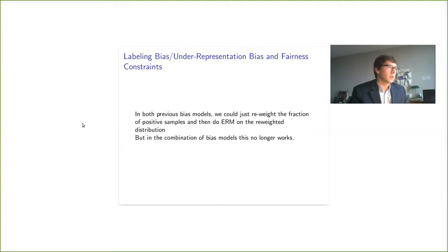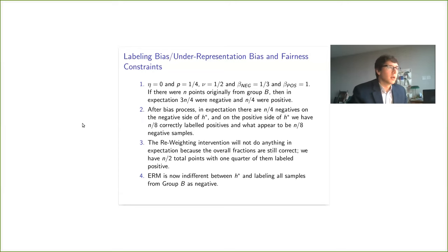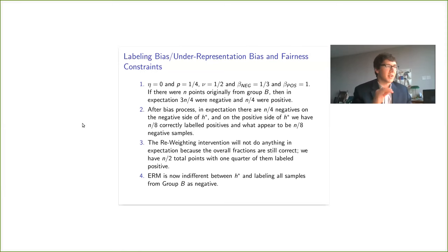The reweighting intervention makes the dataset have the same fraction of positives for group A and group B. That worked in the previous two bias models individually, but it doesn't work when we combine labeling bias and underrepresentation bias. Because we have both beta-negative and beta-positive parameters, we can move the mass around such that we have the same overall statistics in terms of positives and negatives, but where those positives and negatives are located has changed. So now ERM sees no difference between H* and sending all of group B to negative, and it prefers sending everything in group B to negative.